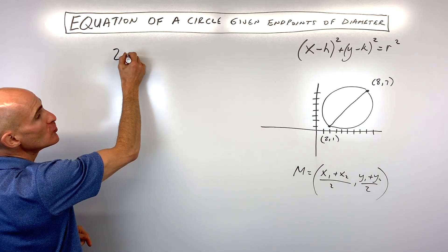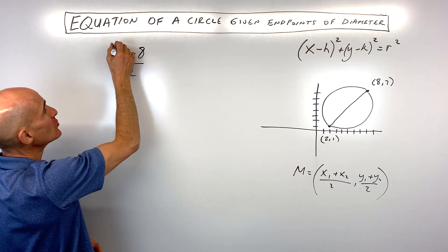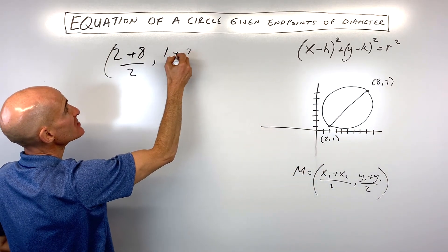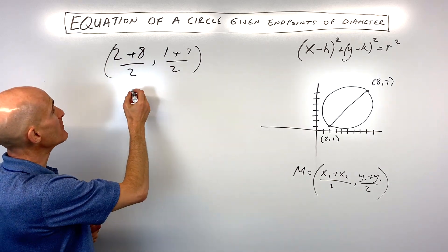So if we take 2 plus 8, I'm just adding the two X coordinates and dividing by 2, and I'm going to take 1 plus 7, adding the two Y coordinates together and dividing by 2, we'll find that middle point, the midpoint.